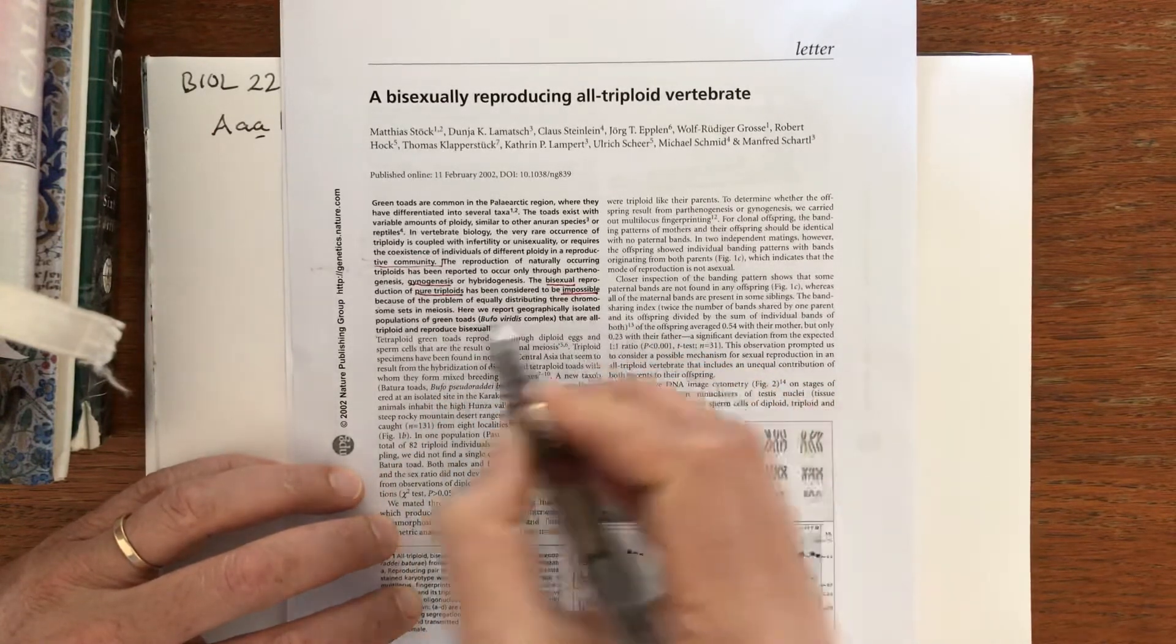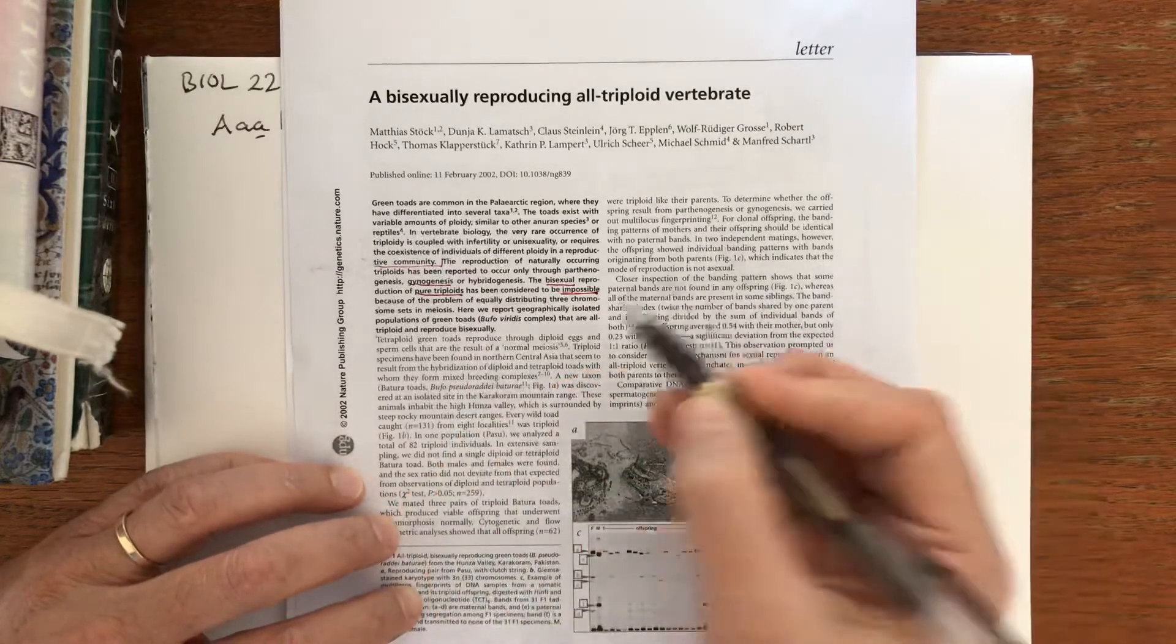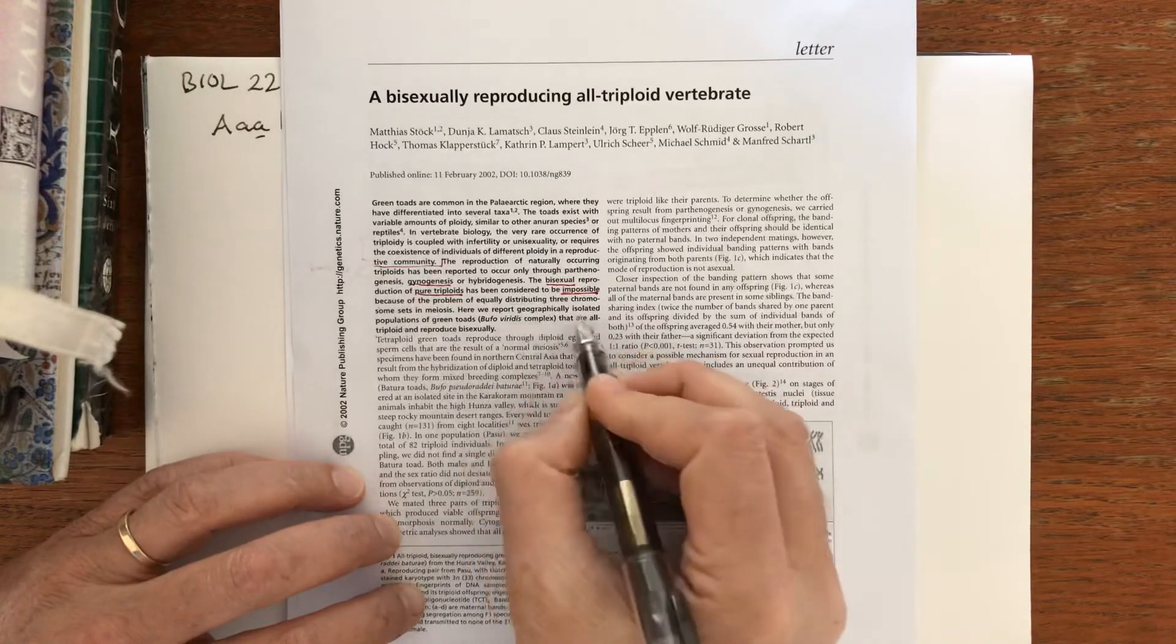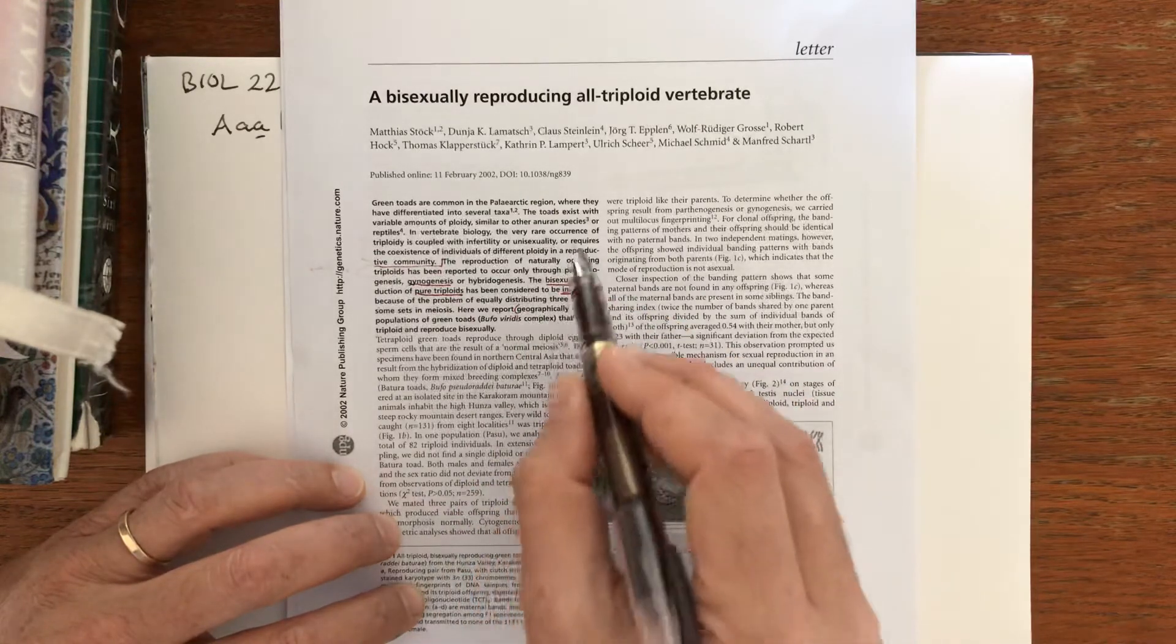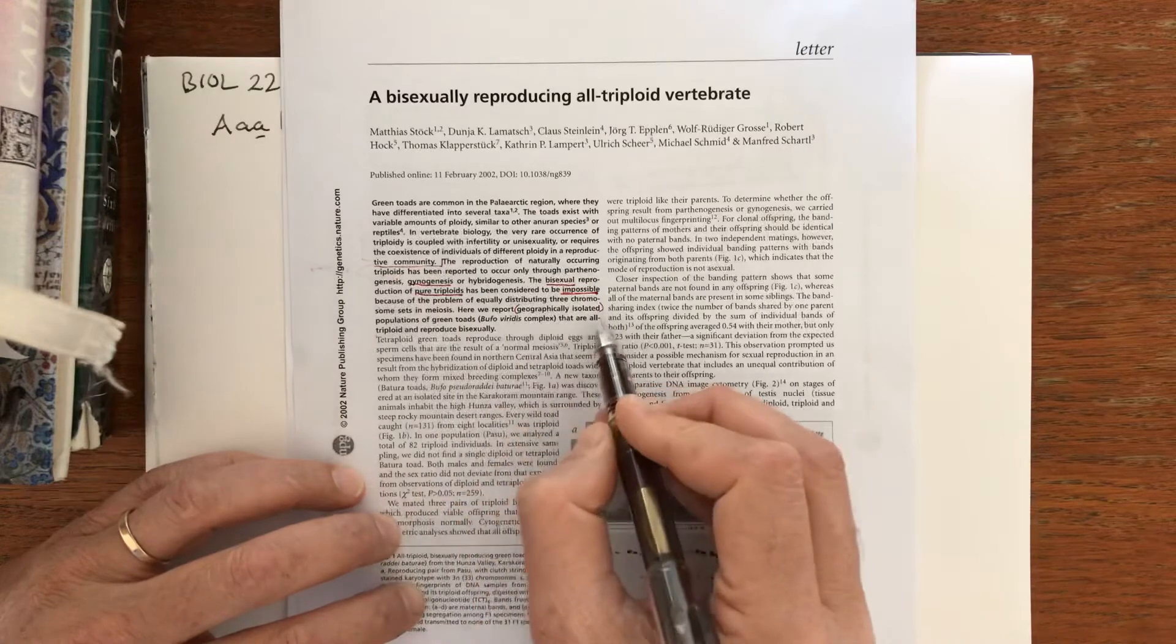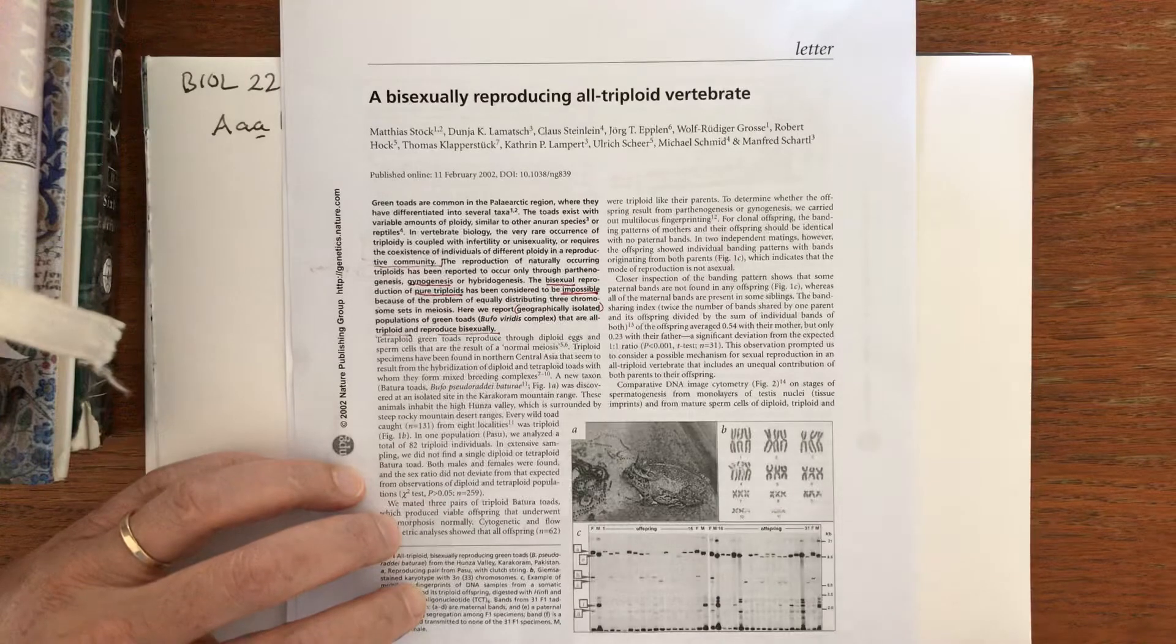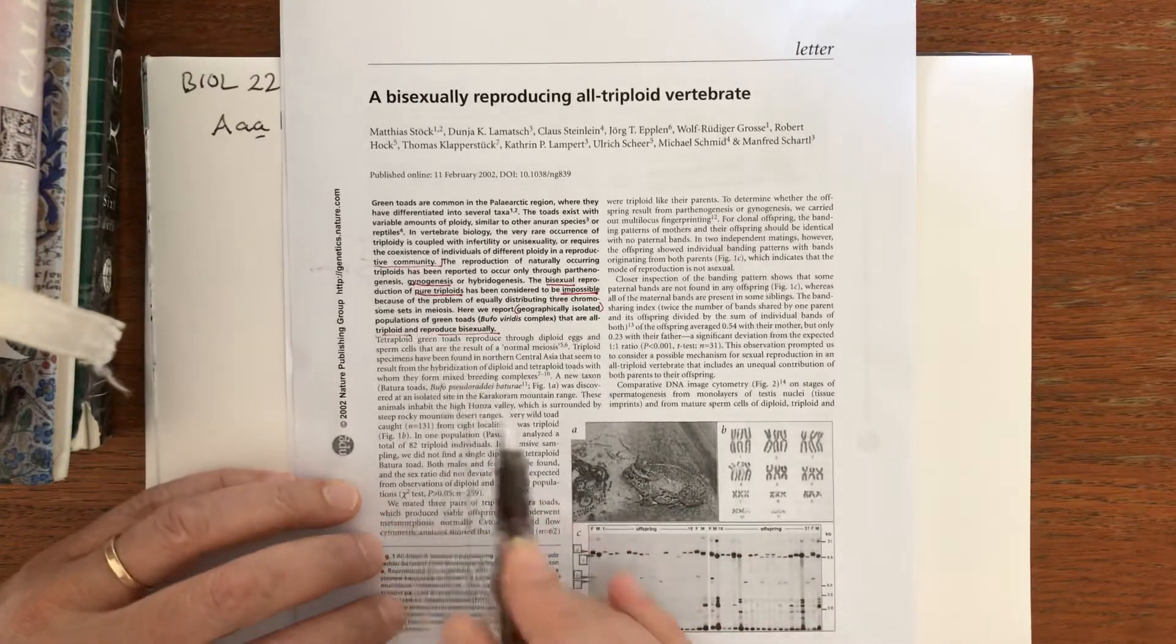The bisexual, that is male and female, reproduction of pure triploids has been considered to be impossible because of the problem of equally distributing three chromosome sets at meiosis - that is, that odd numbers cannot be divided by two. So this is a really interesting case; we have something presumably historically considered absolutely impossible. Here we report a geographically isolated population of green toads that are all triploid and reproduce bisexually. This is quite a nice case where there's something that is considered impossible and they find that it is possible and they demonstrate a mechanism.